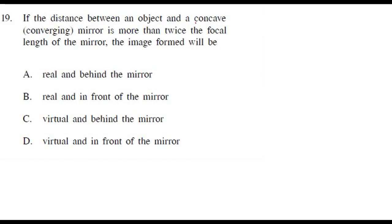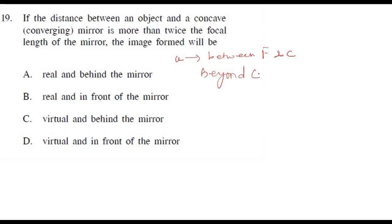The distance between the object and concave mirror is more than twice the focal length. That means the object is between F and C. The image would be real, inverted, and beyond C. Beyond C means on the mirror side — so it will be real and in front of the mirror. That is the correct answer.